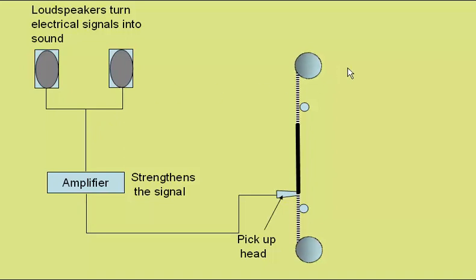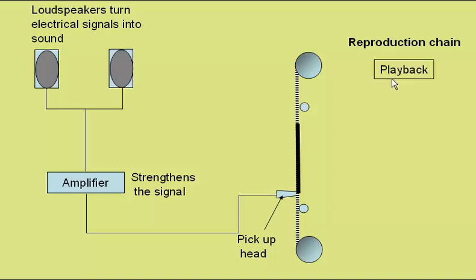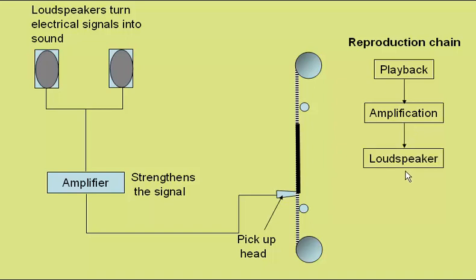So here we have the reproduction chain starting with the playback system which in this case is from the tape player, moving on to amplification to make the signal stronger, and finally to the loudspeakers which turn the electrical signal into sound.